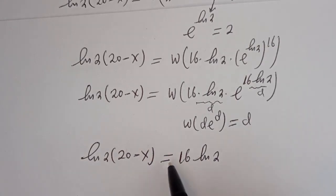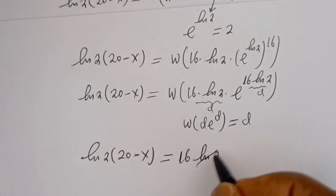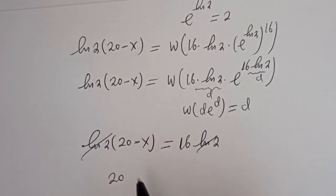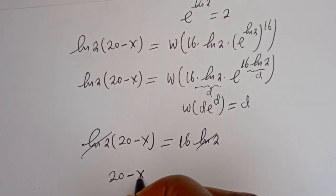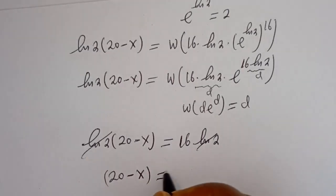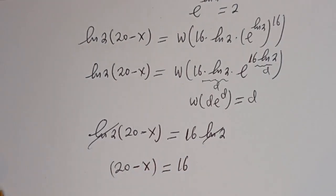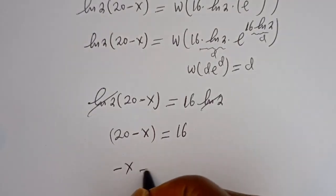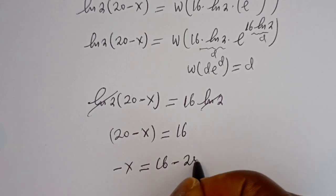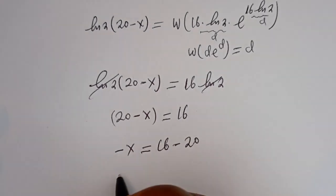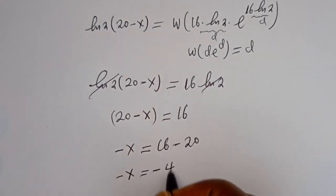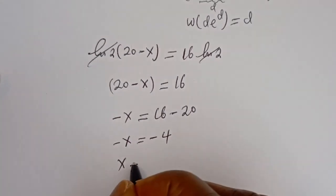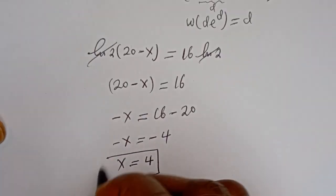Now let's divide both sides by ln of 2. We cancel this and we have 20 minus x is equal to 16. Then minus x is equal to 16 minus 20, so minus x equals minus 4, therefore x is equal to 4. This is the final answer.